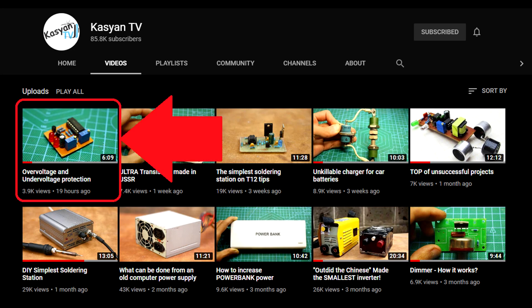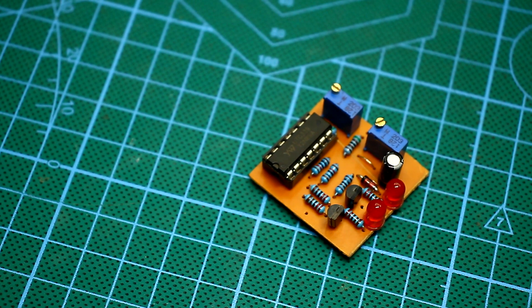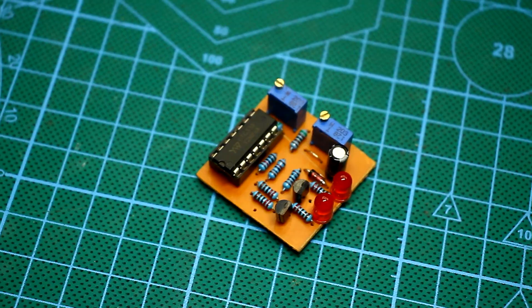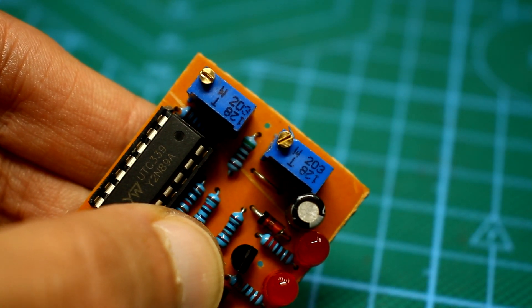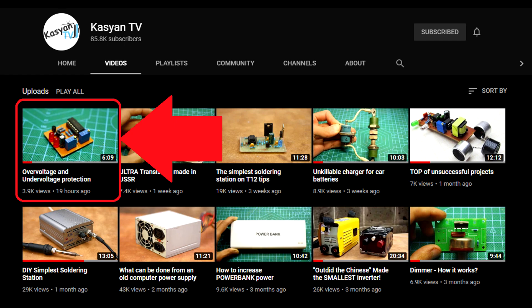Recently, I published a video in which I showed and explained the principle of operation of the protection circuit from low and high voltage. It can be implemented in almost any low voltage circuit. I advise you to watch this video. There are many details. You will find the link in the description.